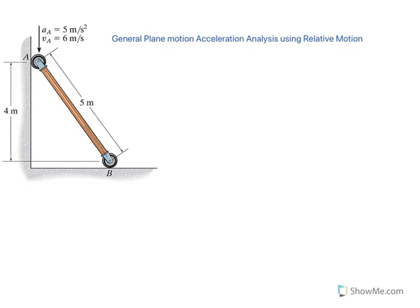Hello again. I'm here with a continuation of a problem that you have already seen in another video, which relates to determining the velocity of different points on a rod going through a combination of translation and rotation using the IC method. I'll put the link for that video at the end of this one. We have already done the velocity analysis.